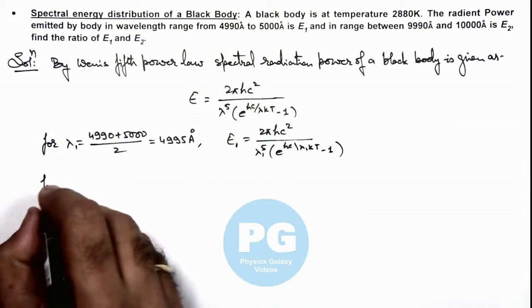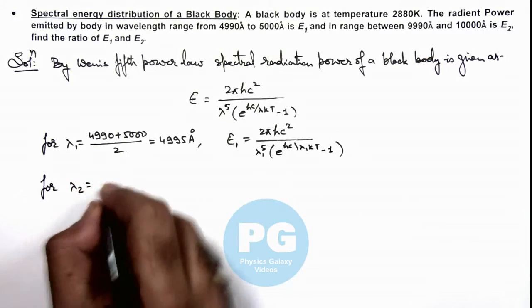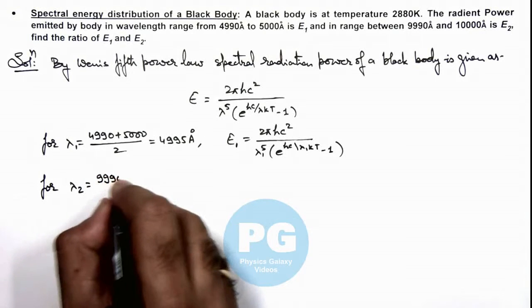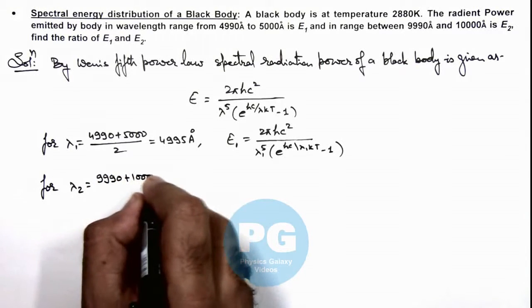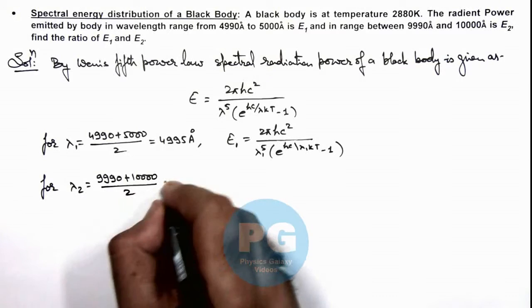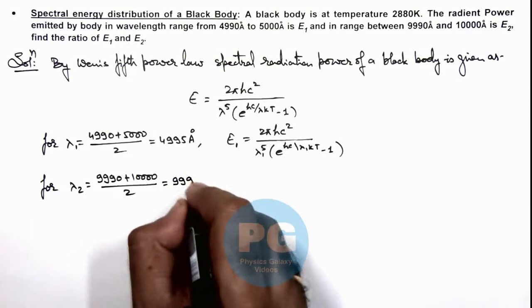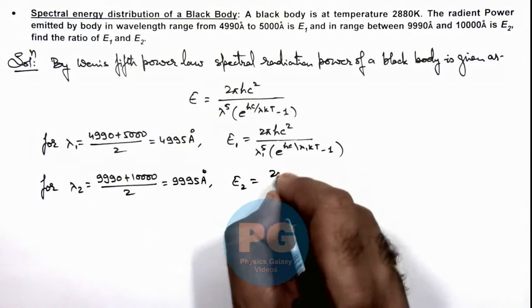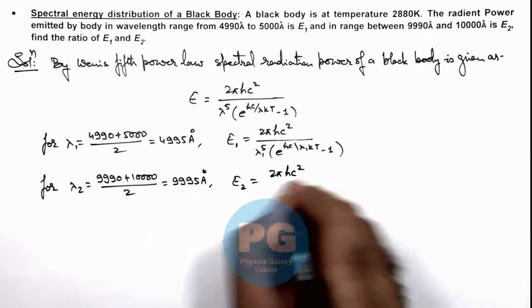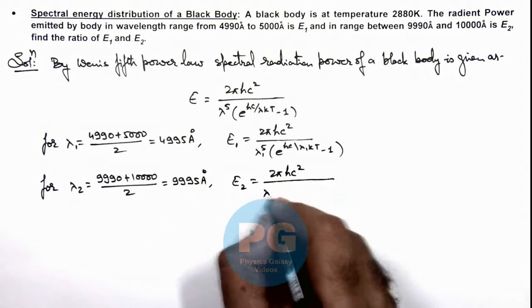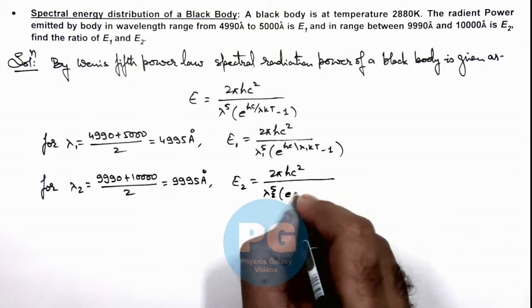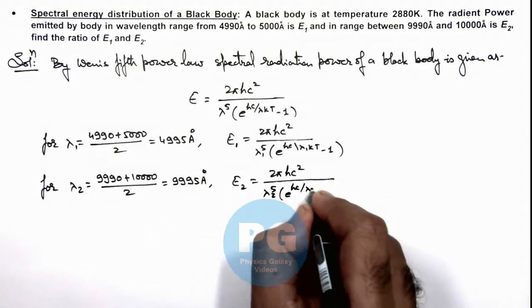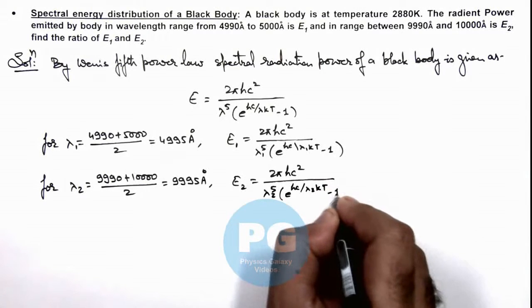Similarly, we can write for λ2, which is 9990 plus 10,000 divided by 2, which is 9995 angstrom. The spectral radiation power E2 is given as 2πhc² divided by λ2 to the power 5, multiplied by e to the power hc by λ2kT minus 1.